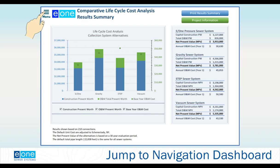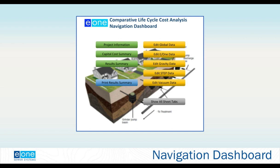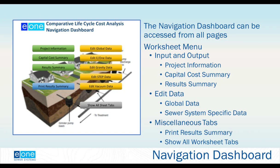Your next move would be to jump to the navigation dashboard by clicking the menu tab on the upper left-hand corner. This button is on every sheet and brings you to the navigation dashboard. You have three primary blocks: inputs and outputs, which is the project information sheet; the capital cost summary; and your results summary. Then you have edit data — the orange or yellowish-orange buttons, when clicked, bring you to sheets that allow you to change any data used to calculate quantities and costs. You have the global data, E1, gravity, step, and vacuum data.